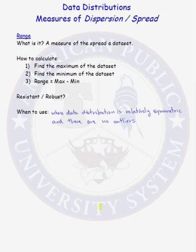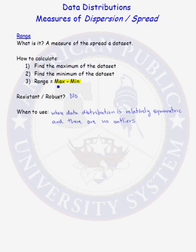The range is a measure of the spread of the data set. The range is the maximum data value minus the minimum data value. Is the range a resistant statistic? The answer is no — the range can be greatly influenced by either the maximum or the minimum of a data set if those are extreme values. Because it's not resistant, you only want to use the range if there are no outliers in your data set.